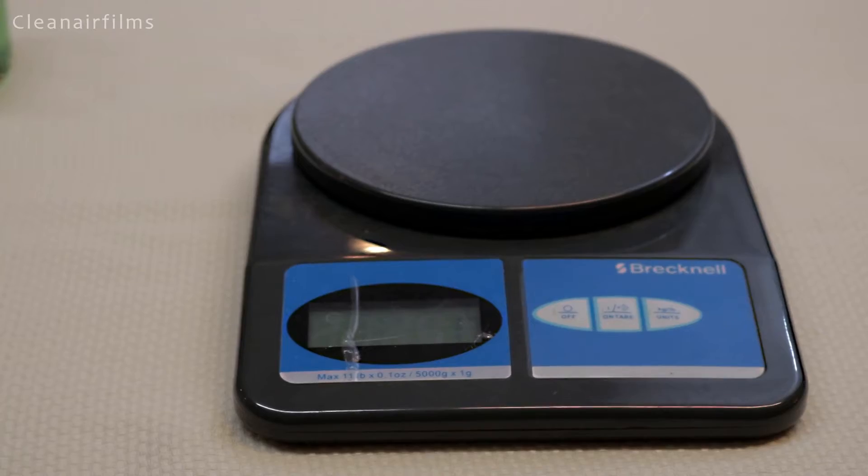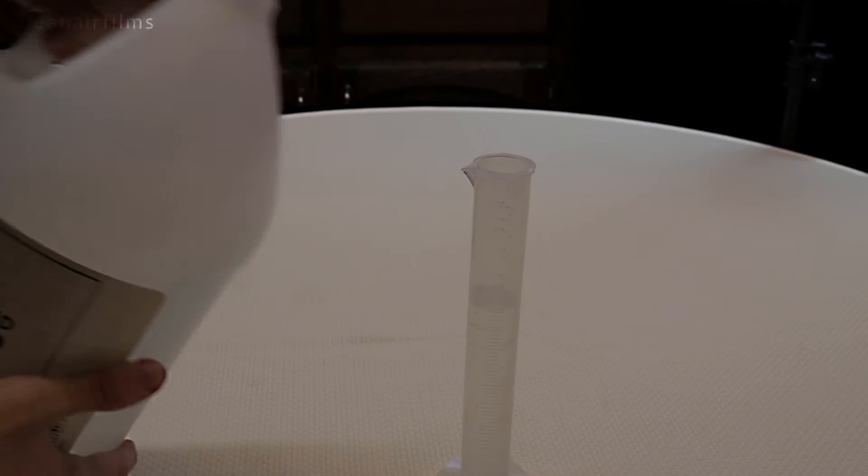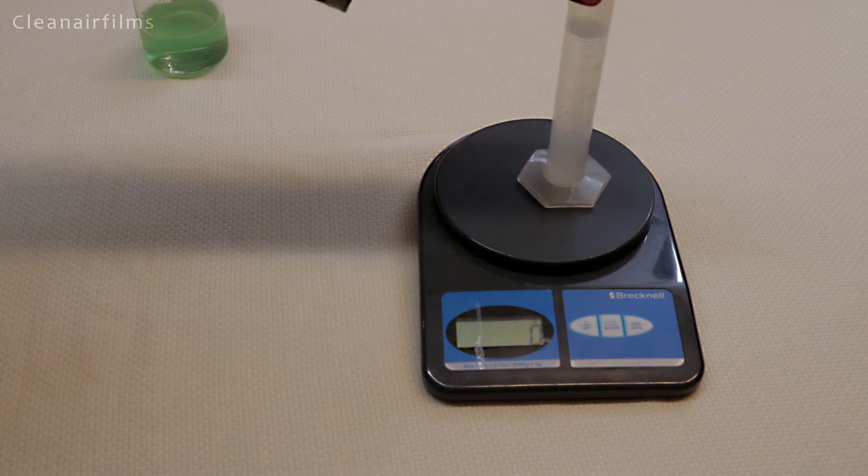Rinse out the graduated cylinder with distilled water. Measure its mass. Now add 50 milliliters of vinegar to the graduated cylinder. Measure its mass again. Save these measurements for later.